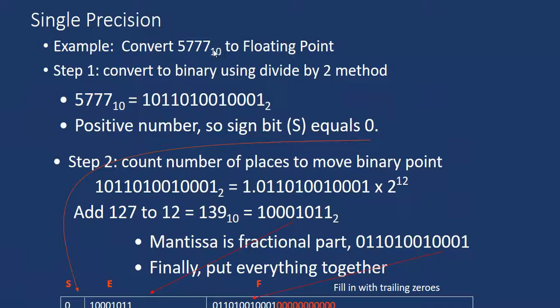Take a decimal number 5777₁₀ and convert to floating point. Step 1: convert the decimal to binary. 5777 in binary is 1011010010001, which is 13 bits. It is positive, so the sign bit is 0. Step 2: count places to move the binary point. We have 13 bits, so we can move 12 bits. We write it as 1.{remaining 12 bits} × 2^12.